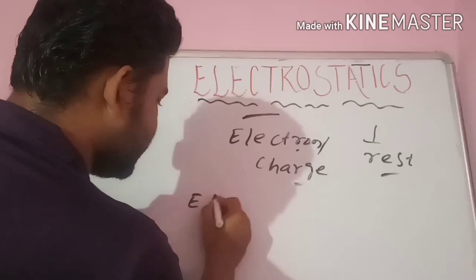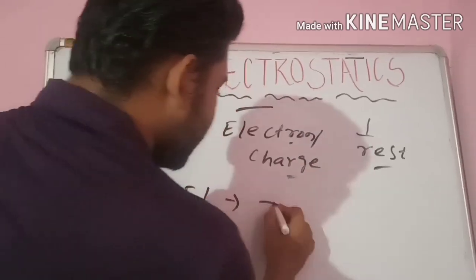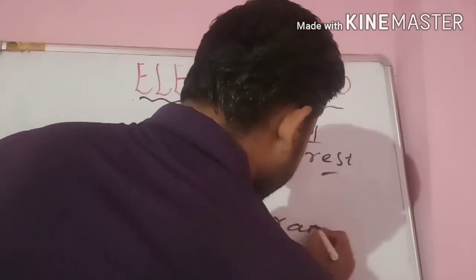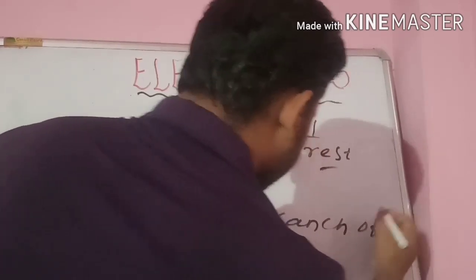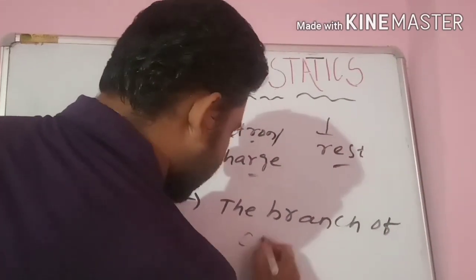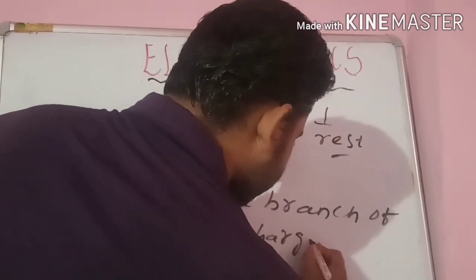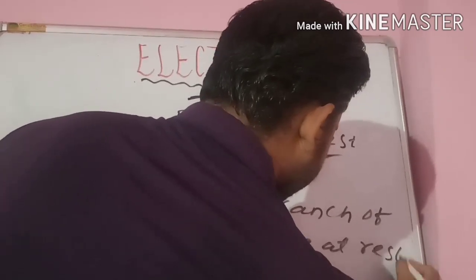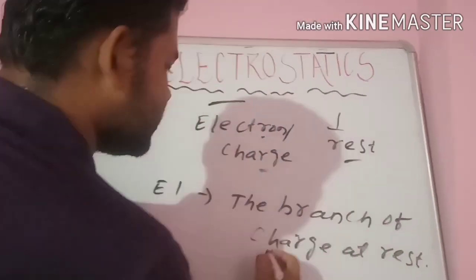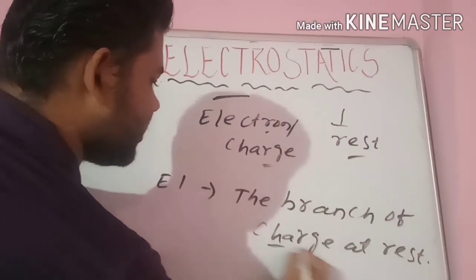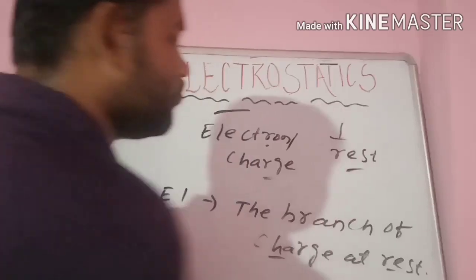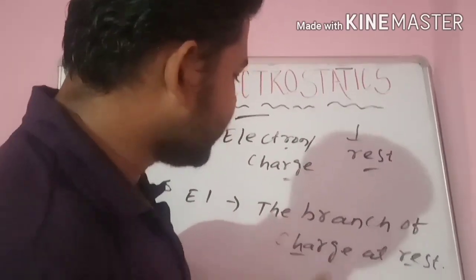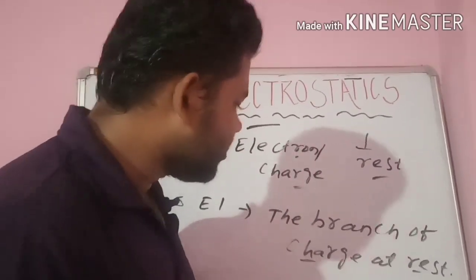What is electrostatics? The branch of physics which deals with the study of charge at rest. The word charge at rest is called electrostatics.